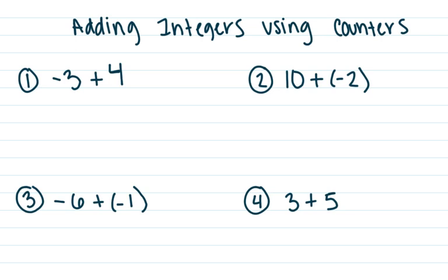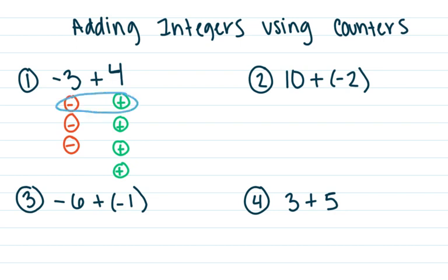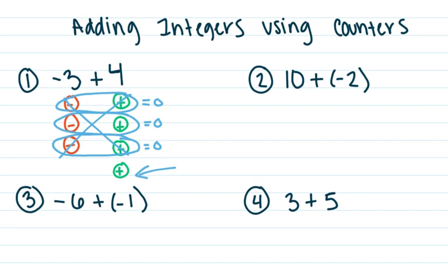To begin with, I want to use some modeling to represent our process. Here on number one, I have three negatives represented by those three red circles with negative dashes in them. I also have four positives, represented by those green circles. To add three negatives to four positives, I want to group my numbers together in zero pairs. I have one group of zero pairs, two groups of zero pairs, three groups of zero pairs. All of these equal zero, so they're all going to cancel each other out and leave us with one positive left over. So negative three plus four is a positive one.